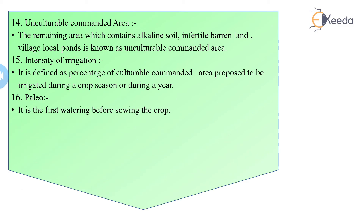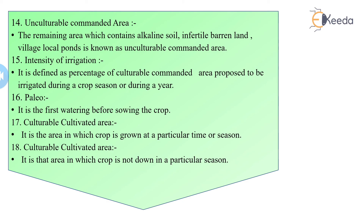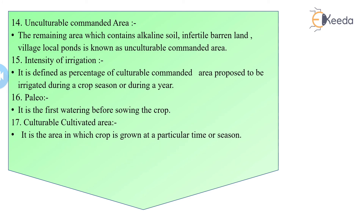Palio is the first watering given to the land before sowing of the crop, required for cultivation and ploughing purposes. The culturable commanded area is divided into two categories: culturable cultivated area — the area on which crops are grown in a particular season — and culturable uncultivated area — the area on which crops are not sown in a particular season.